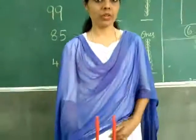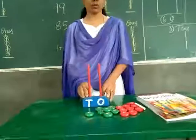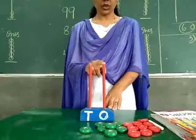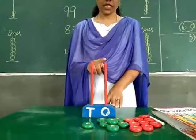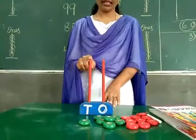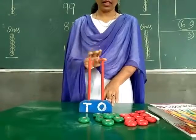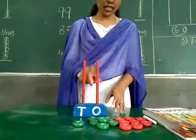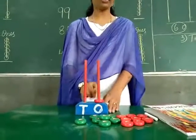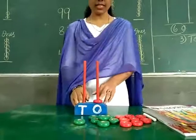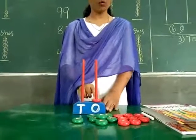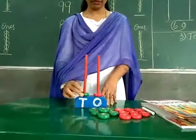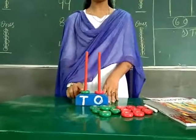Look at here children. We use this abacus to count the numbers. This is an abacus. This abacus has 2 spikes. One spike represents the 1's place, and another spike represents the 10's place. Each bead in the 1's place represents one, and each bead in the 10's place represents ten.